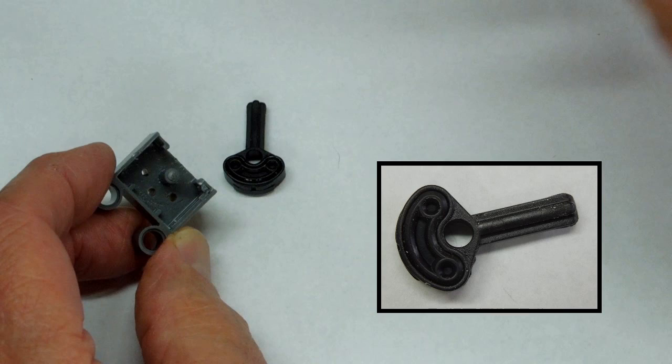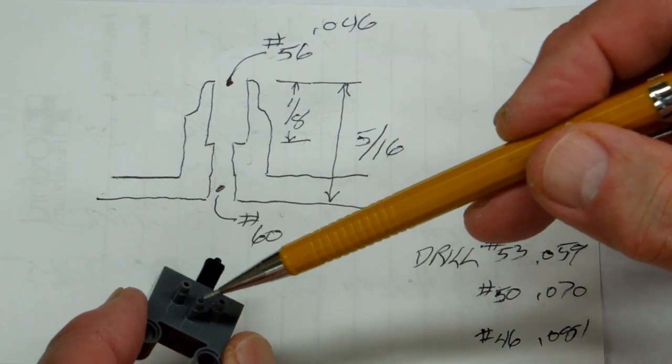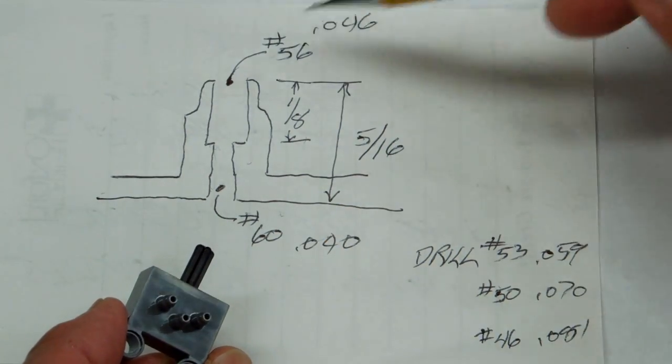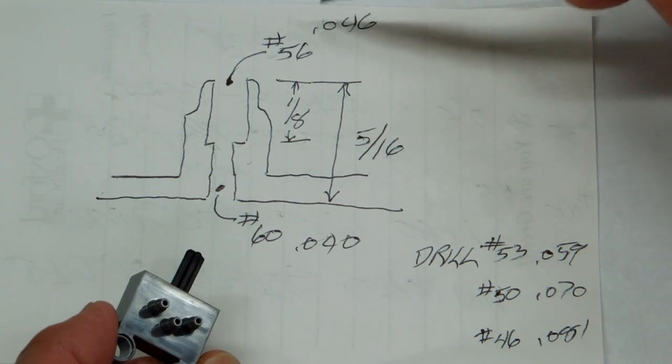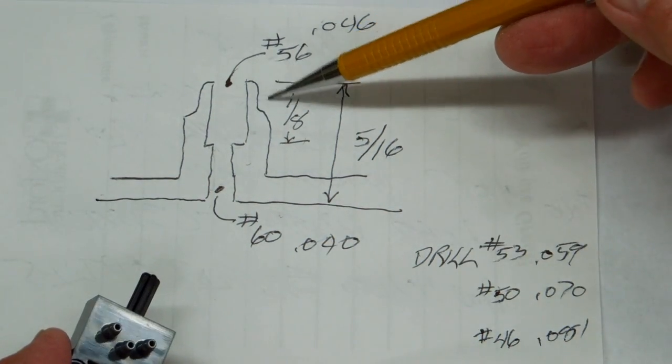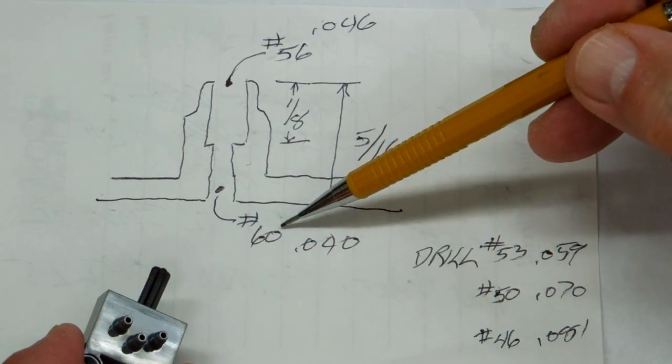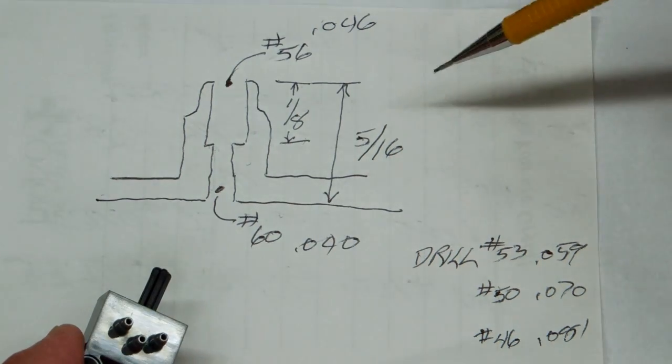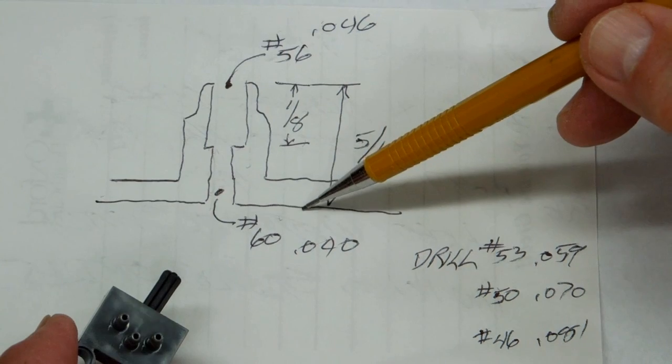I believe these can be safely and effectively drilled without disassembly. Each of these little nipples or stems, the initial opening on that is equivalent to a number 56 drill or point 046 diameter, goes down for about an eighth of an inch. And then down here it's a number 60 opening or point 040, and that's about five sixteenths until it breaks through to the inside surface.